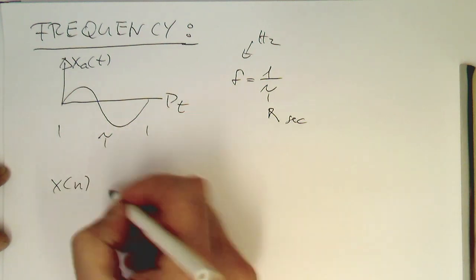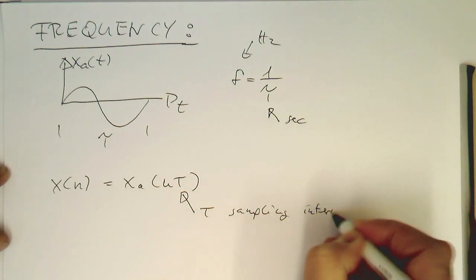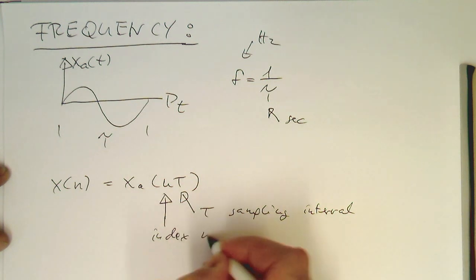So now in the sample domain, we are losing this temporal information. So remember, xn is xA of nt. So t is our sampling interval. And n is just our index number, or sample number. And then, so xA is our analog signal here. And this is our digital signal.